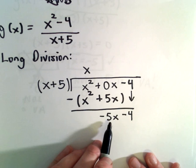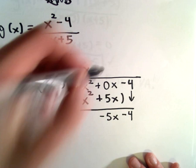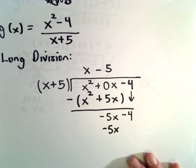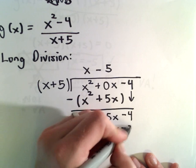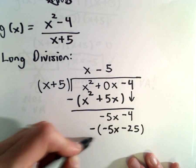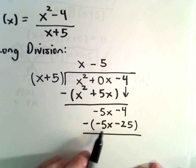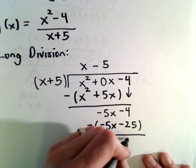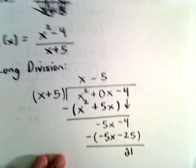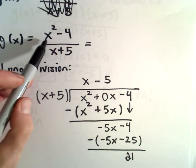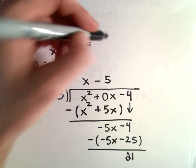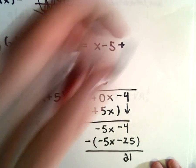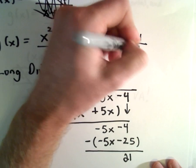Now I think x multiplied by what is negative 5x? Just negative 5. We'll get negative 5x when we distribute. Negative 5 and positive 5 is negative 25. If we subtract, we'll get negative 4 plus 25, which gives us 21 as our remainder. So we can write x squared minus 4 divided by x plus 5 as x minus 5 plus our remainder of 21 over x plus 5.